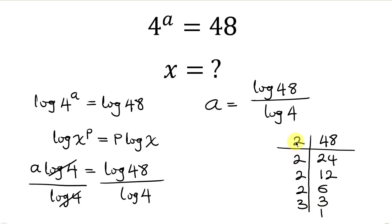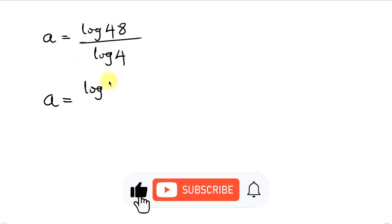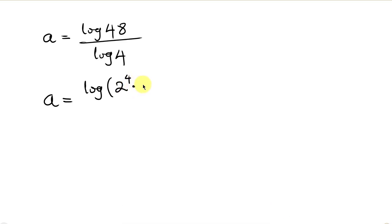So you can see that I have 2 times 2 times 2 times 2 — that's 2 to the 4th — times 3. So 48 equals 2 to the 4th times 3. I'm going to write this in place of the 48 here, so this becomes a equal to log of 2 to the 4 times 3, all over log 4.